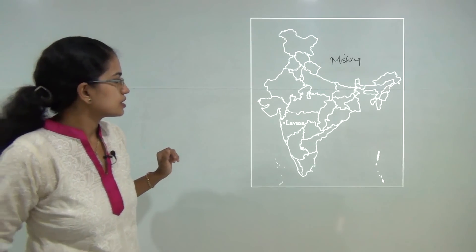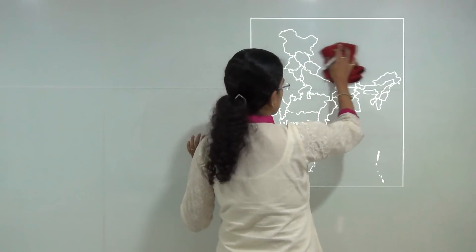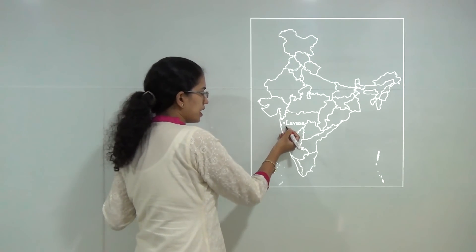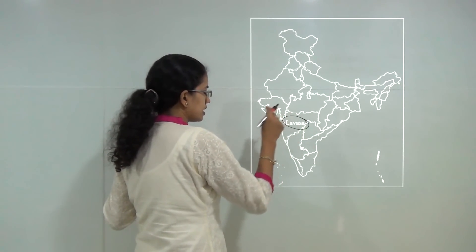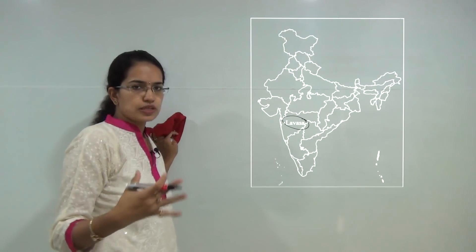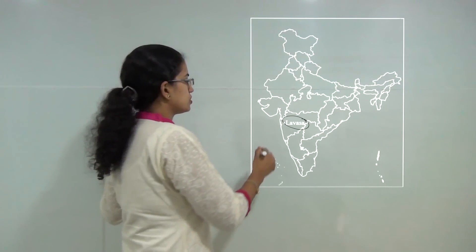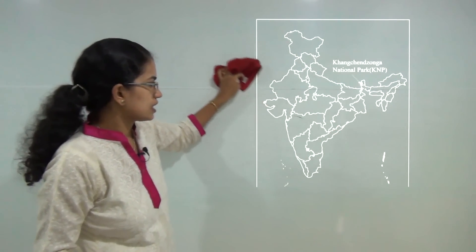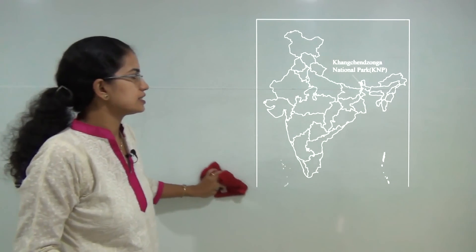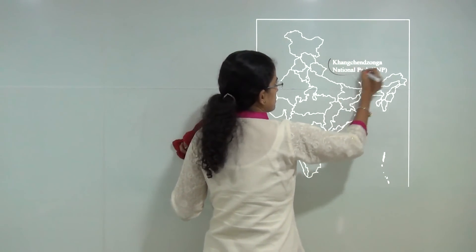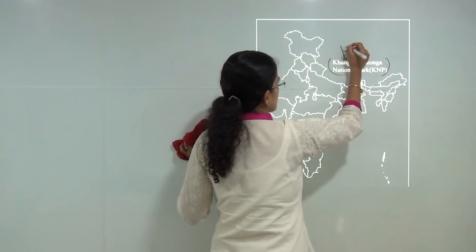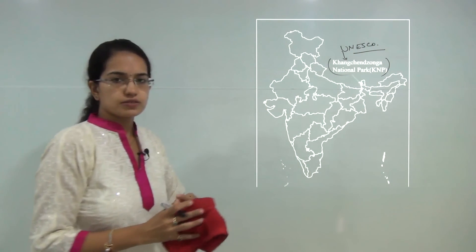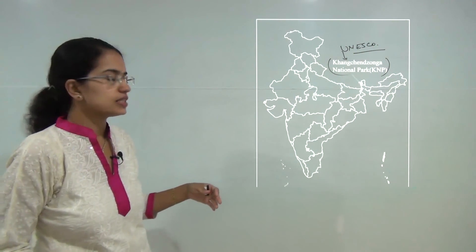Next is Lavasa. Lavasa is one of the very famous planned cities of India. It lies near Pune in Maharashtra and it has been asked in the map location questions two or three times in UPSC. Next you have Kanchenjunga National Park. It is located in Sikkim and has been recently covered under the UNESCO heritage sites. It is important from the perspective of contemporary GS.